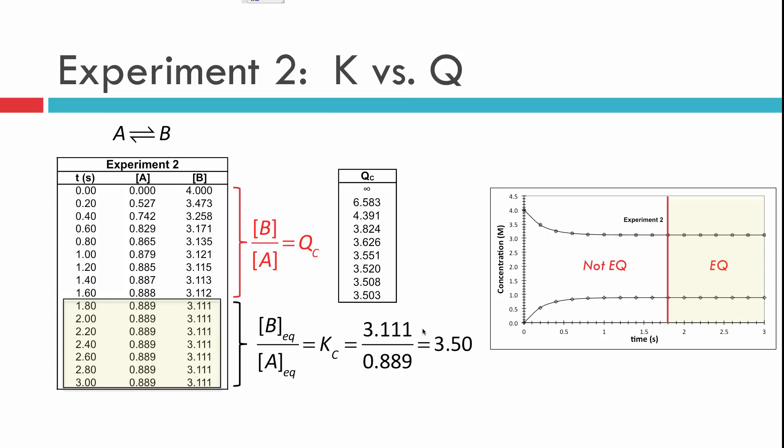So this thing Q, which can have any value in the world, moves until it reaches the same value as K for the reaction. In this particular case, because K was less than the initial Q naught, the reaction quotient will decrease by actions of the reaction, by the shifting of the reaction in one direction or the other, until Q is equal to K.